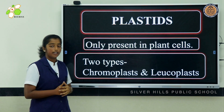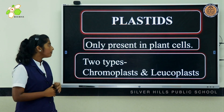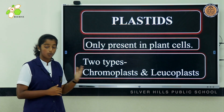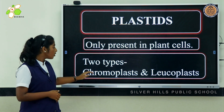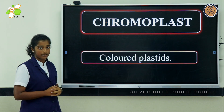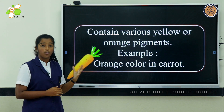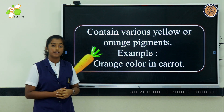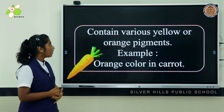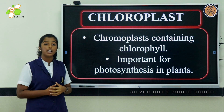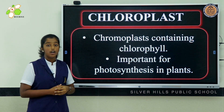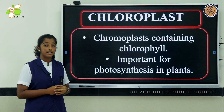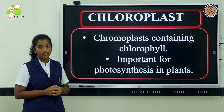The next cell organelle is plastids. Plastids are only present in plant cells, and they are of two types: chromoplasts and leucoplasts. Chromoplasts are colored plastids and they contain various yellow or orange pigments, such as the orange color in carrots. Now, chloroplasts are chromoplasts containing chlorophyll. Chlorophyll is a green pigment and it is very important for photosynthesis in plants.